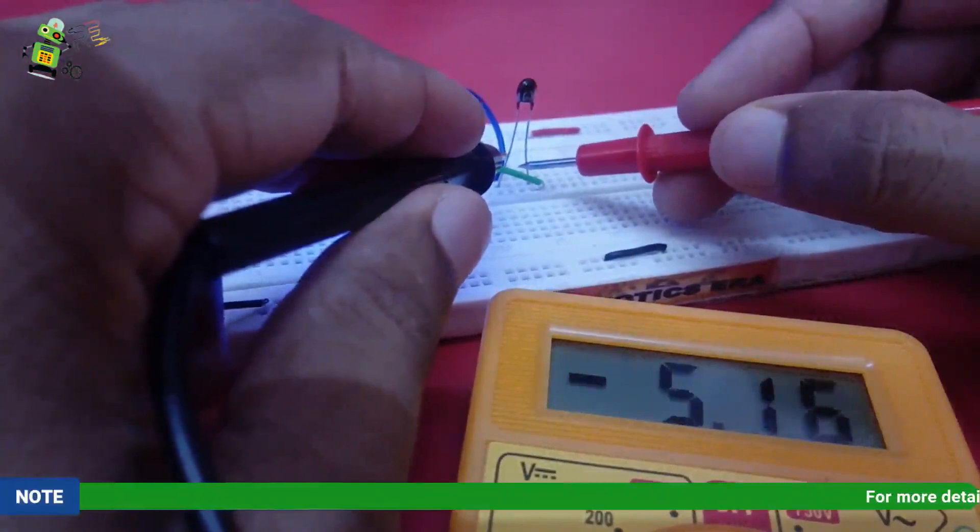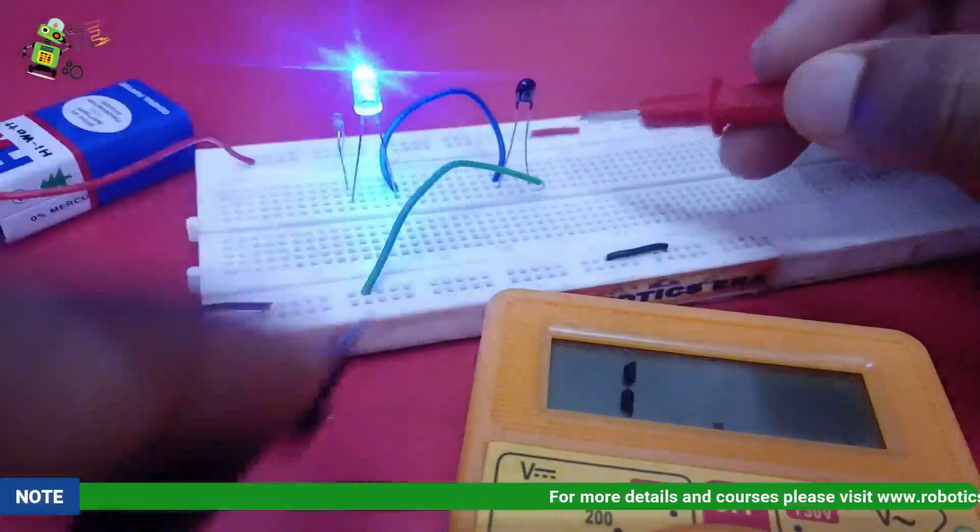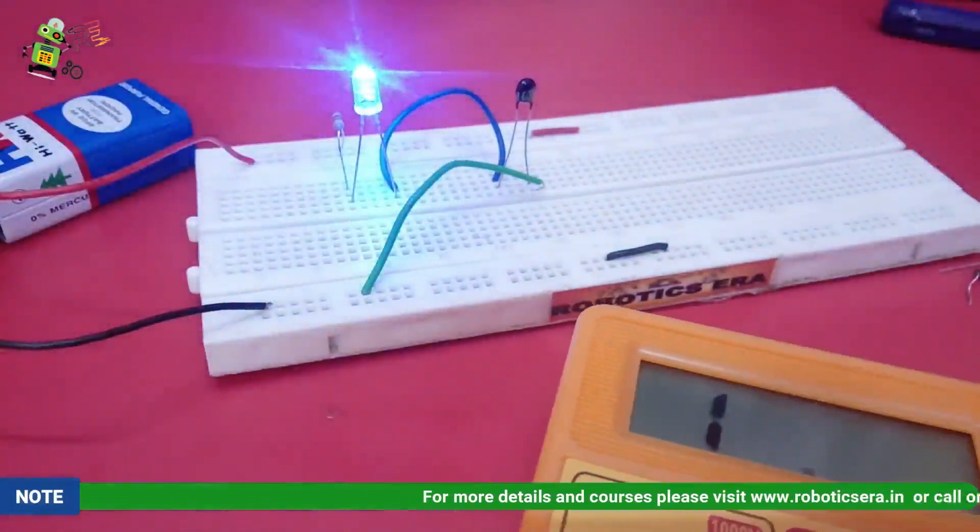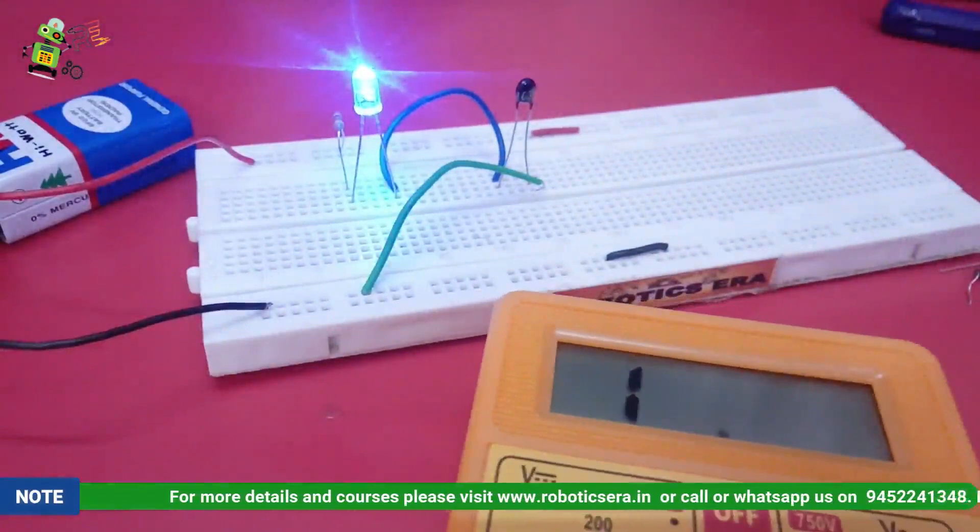See, its value is reduced to 5.19 as earlier it was 7 point something because it is hot. Now as we increase the amount of heat, its value will decrease and the glow of LED will increase.